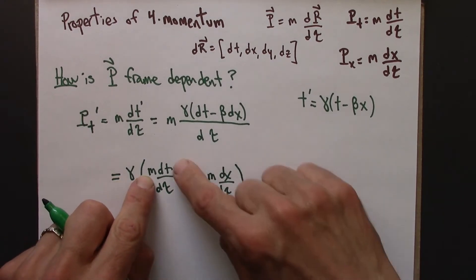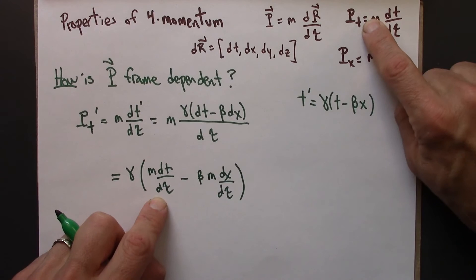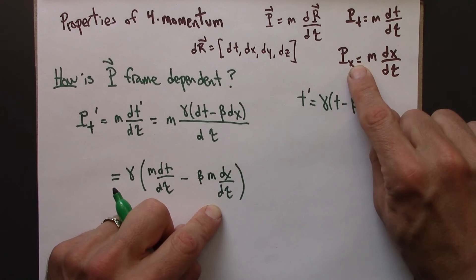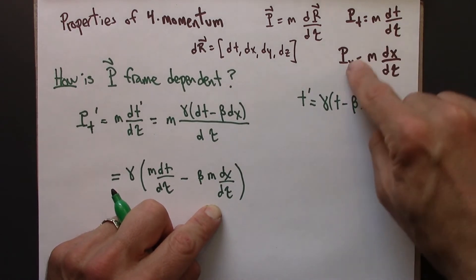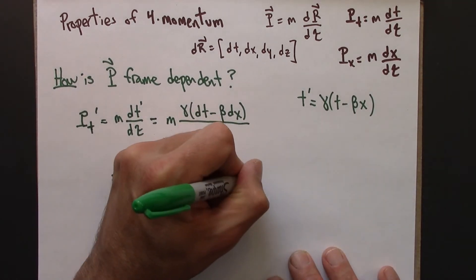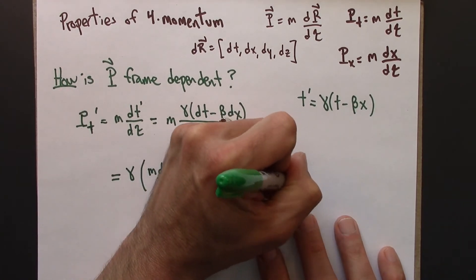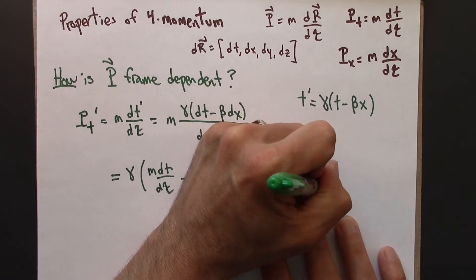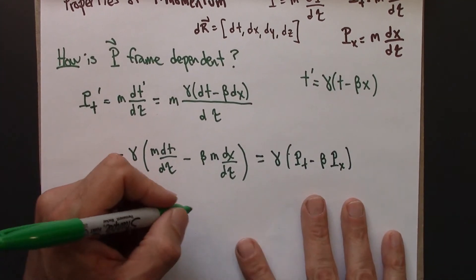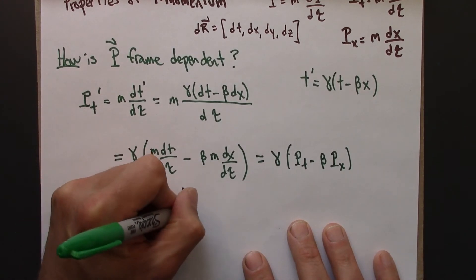Now check this out. m dt/d tau, that's just Pt, the momentum in the unprimed frame. m dx/d tau, that's just Px, the x momentum in the unprimed frame. So using this, this becomes gamma Pt minus beta Px. And let me just write that: Pt prime equals gamma (Pt - beta Px).